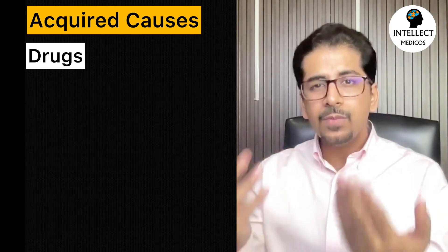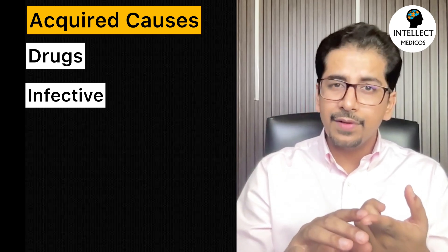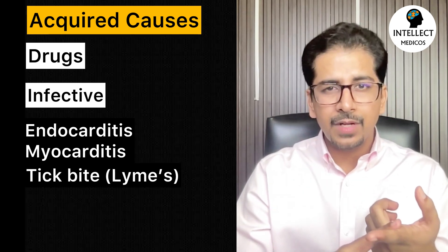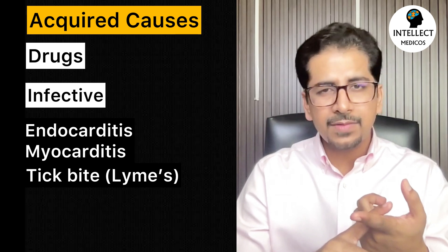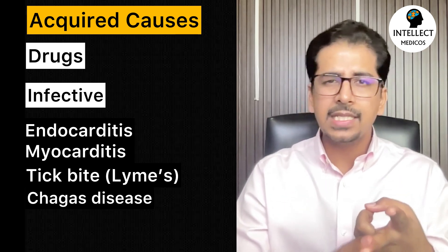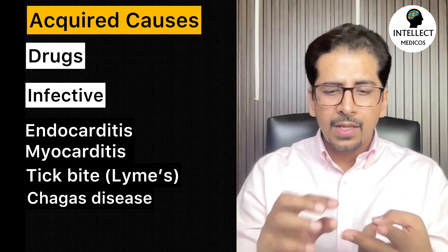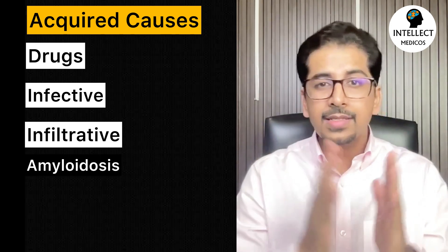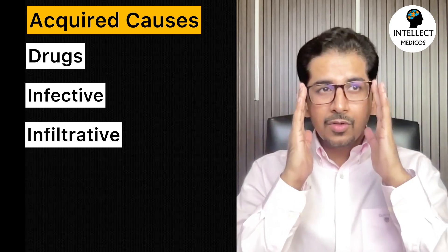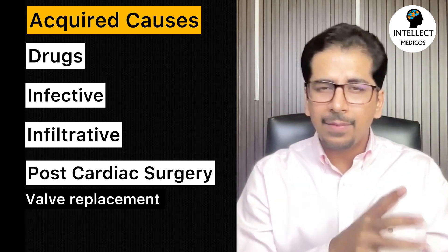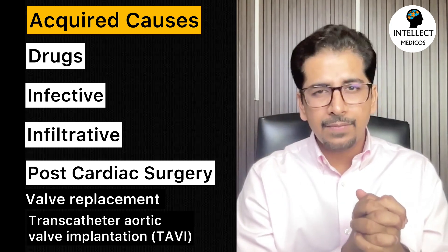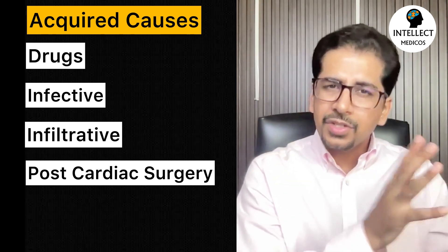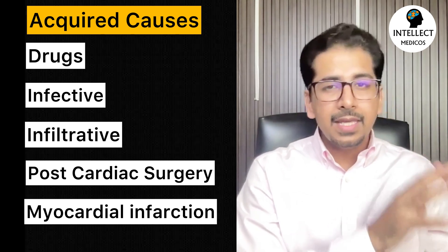Other causes are infective — endocarditis, myocarditis, and tick bite causing Lyme's disease, which is very important. It can also be because of Chagas disease, also called American trypanosomiasis. Other causes include infiltrative cardiomyopathies such as amyloidosis, sarcoidosis, and hemochromatosis. Further, post-cardiac surgery causes include valve replacement, TAVI, and CABG. Even ischemic heart disease or acute MI can also cause heart block.